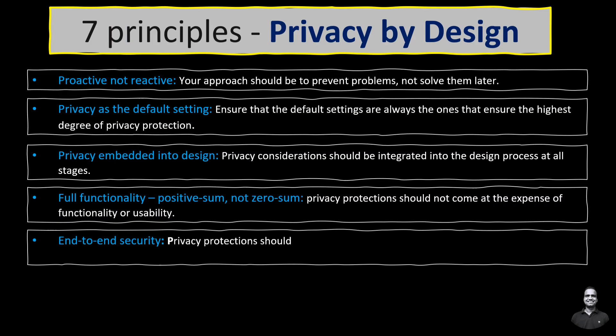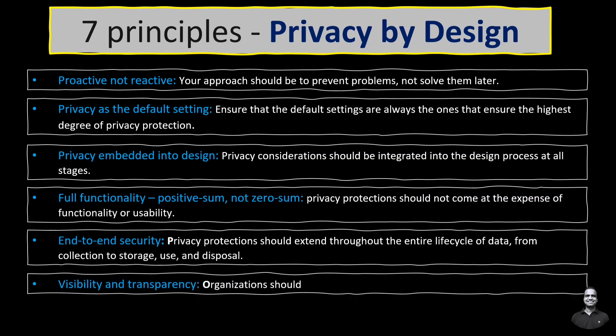The fifth principle is end-to-end security — privacy protections should extend throughout the entire lifecycle of data, from collection to storage, to use and disposal. The sixth principle is transparency — organizations should be transparent about their data practices and policies. For example, a company publishes a detailed privacy policy explaining how user data is collected, used, and protected.